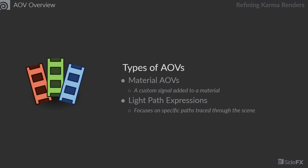Let's talk about a couple types of AOVs that we'll find within Karma. There are two different types — there may be more if you dive into more technical things, but these are the two general types we normally see. The first one is material AOVs. These are signals that are sent from the shaders and materials through to the renderer, and they can include solid colors, noise, or actual image textures being passed to the final render.